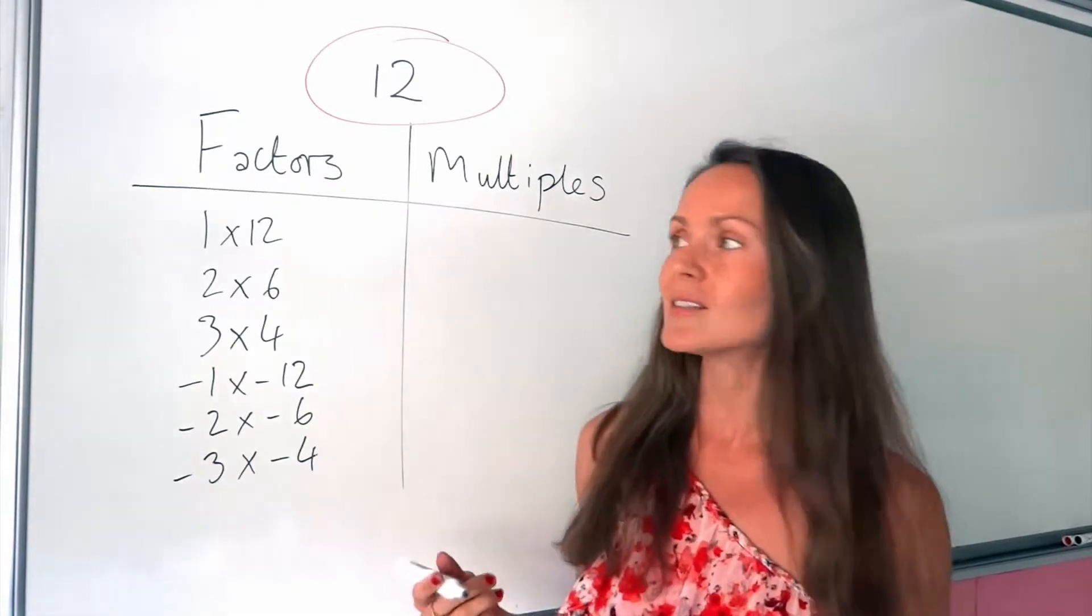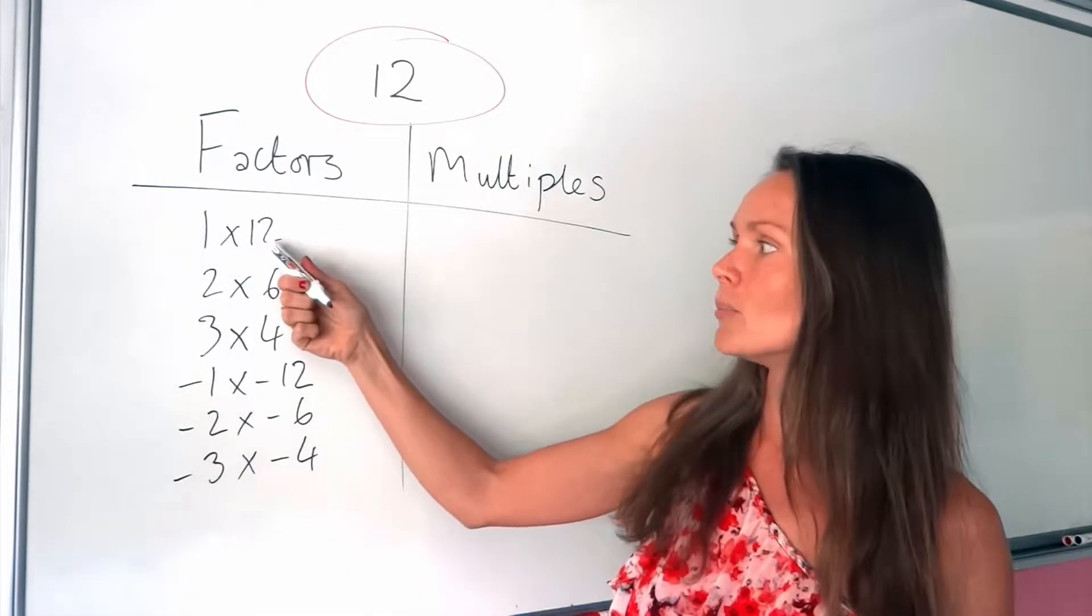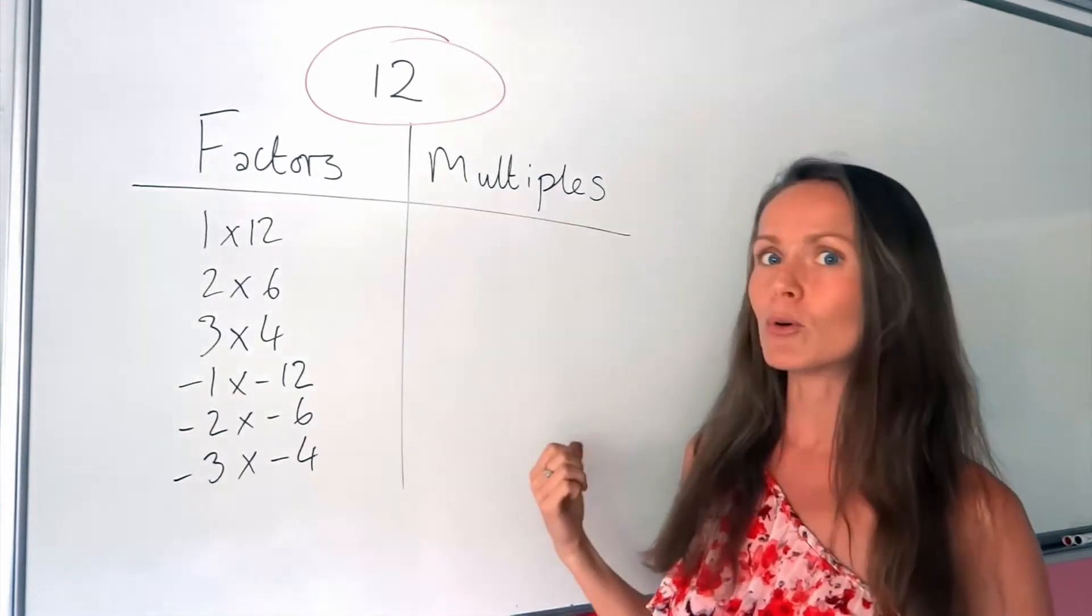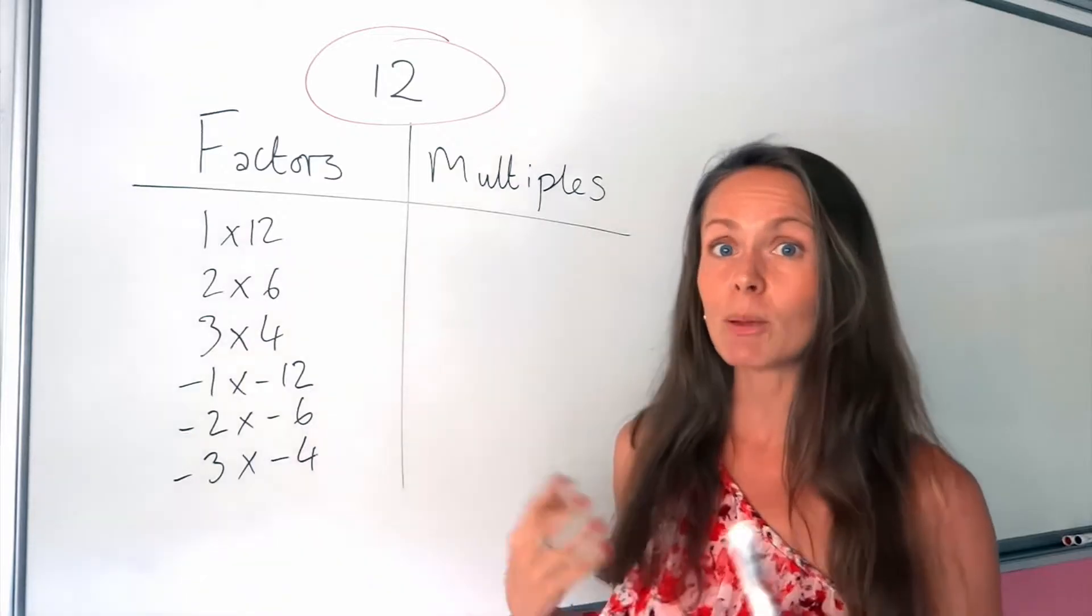So notice how all the factors, they're either the same number or smaller than that number. So when we look at multiples, it's the opposite. They're going to be bigger.